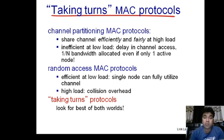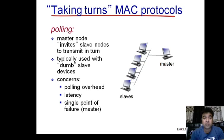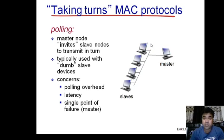Today we are going to discuss the third type of protocol under the multiple access category: taking turn protocols. The first protocol in this category is polling. In polling, there is a master and the other nodes are considered slaves. The master invites all nodes one by one in turns. As shown in the diagram, the master sends a poll, a particular node becomes eligible to transfer data, and then the next one becomes eligible.